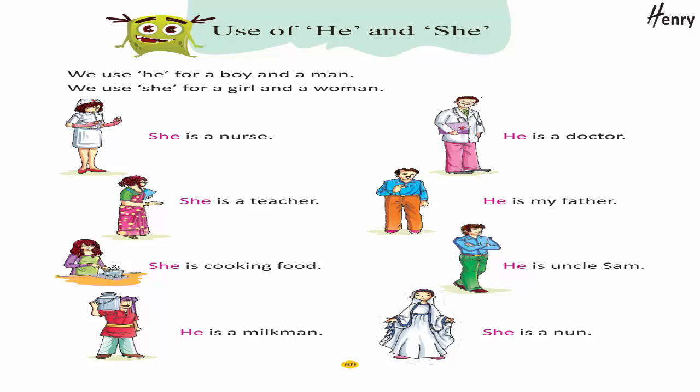Use of he and she: We use 'he' for a boy and a man. We use 'she' for a girl and a woman. She is a nurse. She is a teacher. She is cooking food. He is a milkman. He is a doctor. He is my father. He is Uncle Sam. She is a nun.